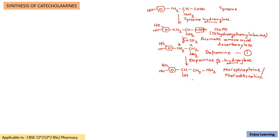Noradrenaline or norepinephrine, by use of the enzyme phenylethanolamine N-methyltransferase, will be converted to epinephrine. By use of this enzyme, a methyl group will be added on the nitrogen. In the previous structure of norepinephrine we have an amine group — on the nitrogen of this amine there will be addition of a methyl group.